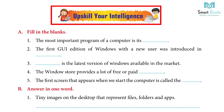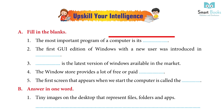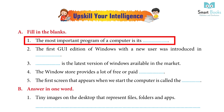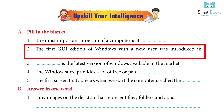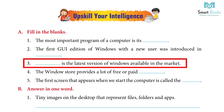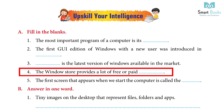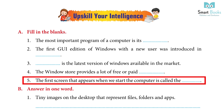Upskill your intelligence — Fill in the blanks: 1. The most important program of a computer is its — Answer: Operating system. 2. The first GUI edition of Windows with a new user interface was introduced in — Answer: 1995. 3. The dash is the latest version of Windows available in the market — Answer: Windows 10. 4. The Windows Store provides a lot of free or paid — Answer: Applications. 5. The first screen that appears when we start the computer is called the — Answer: Desktop.